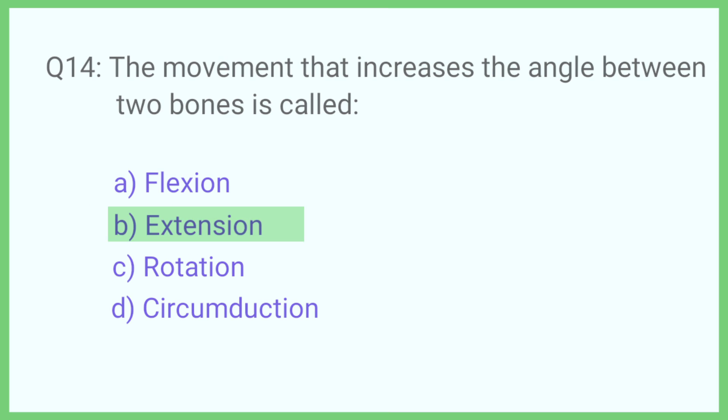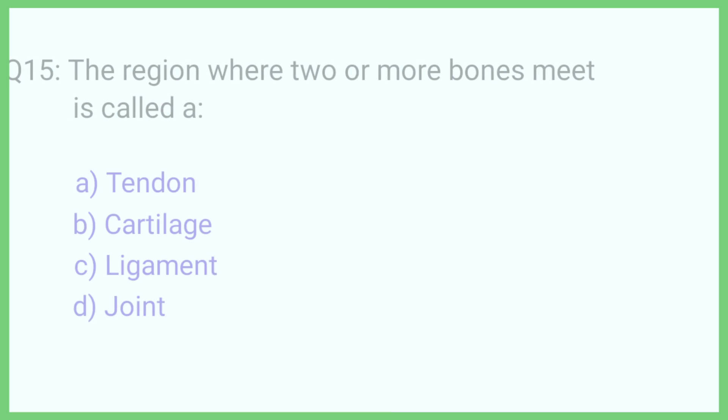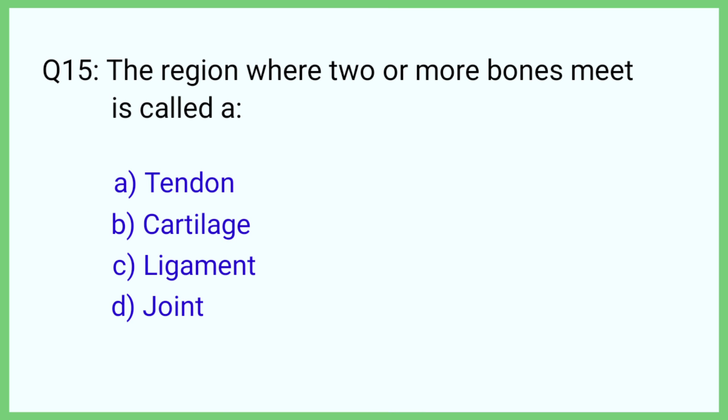Question number 15. The region where two or more bones meet is called what? The correct answer is option D: Joint.